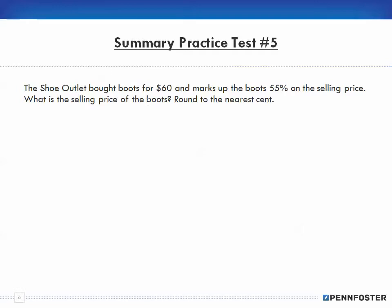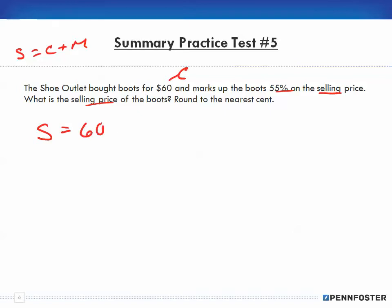Number five: The Shoe Outlet bought boots for $60 — that's our cost — and marks up the boots 55% on the selling price. We want to find the selling price. Selling price equals cost plus markup. So selling price equals $60 plus 55% of the selling price.